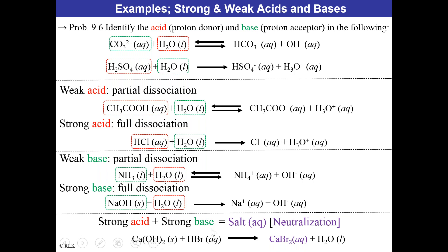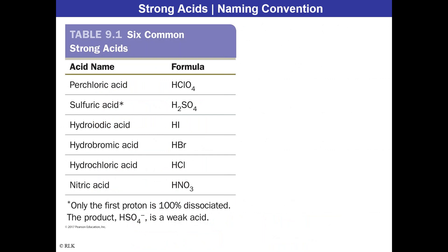Calcium hydroxide is a solid strong base. Adding it to liquid hydrogen bromide forms calcium bromide and water. The salt may partially stay dissolved in water. Hydrogen bromide is the acid; calcium hydroxide is the base. The six common strong acids you should know are: perchloric acid, sulfuric acid, hydroiodic acid, hydrobromic acid, hydrochloric acid, and nitric acid. Perchloric and hydrochloric acids are used in pool chemistry to lower pH.